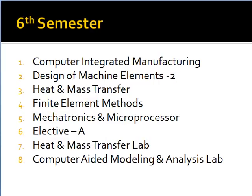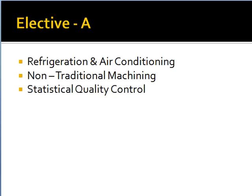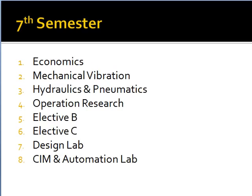In the sixth semester, we have computer integrated manufacturing, design of machine elements 2, heat and mass transfer, finite element methods, mechatronics and microprocessor, and elective A. Electives are subjects you can choose based on your interest — in total there are five electives. The labs are heat and mass transfer lab and computer aided modeling and analysis lab. For elective A, you can go for refrigeration and air conditioning, non-traditional machining, or statistical quality control.